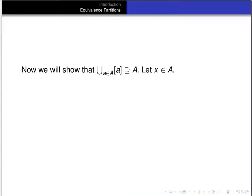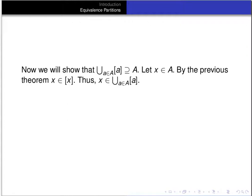Now let's show that A is a subset of the union of the equivalence classes. Let x be some element of A. By the previous theorem, x is an element of its own equivalence class. And since the equivalence class of x appears in the union of all possible equivalence classes, x is an element of one of those equivalence classes — namely the equivalence class of x — and therefore a member of the union.